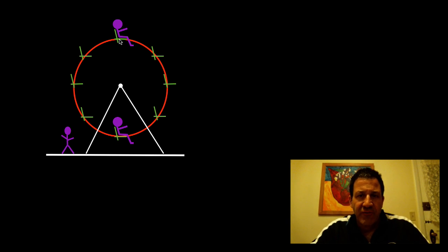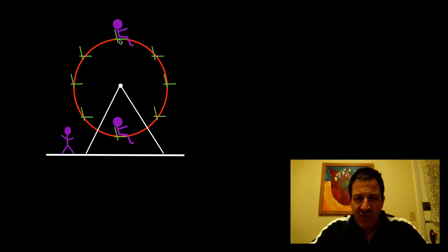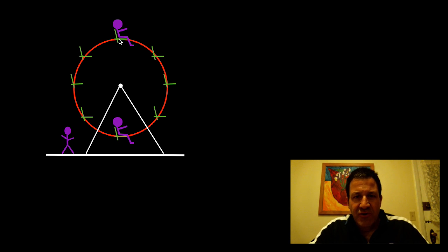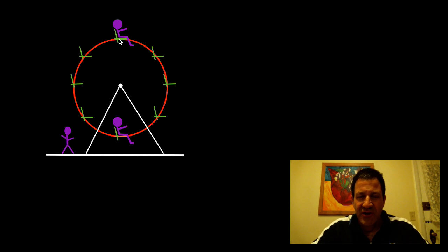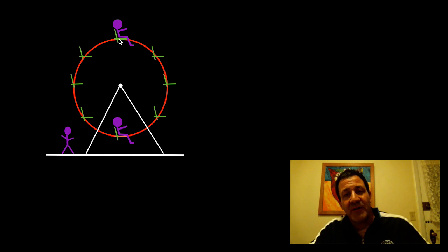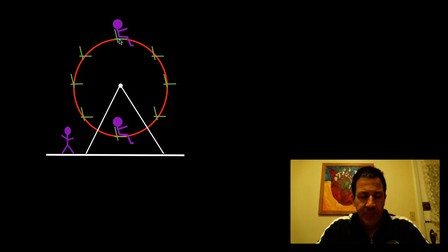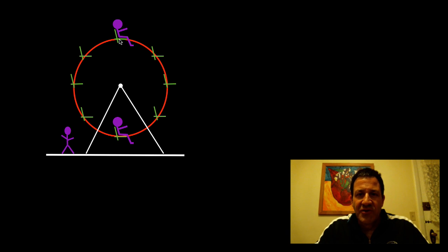Let's talk about uniform circular motion. Uniform circular motion means that you're going around a circle with uniform motion, meaning your speed is constant. But because you're going around a circle, the direction that you're going is constantly changing, and if your direction is constantly changing, then your velocity is constantly changing. If your velocity is constantly changing, then you are accelerating. Acceleration is change in velocity.